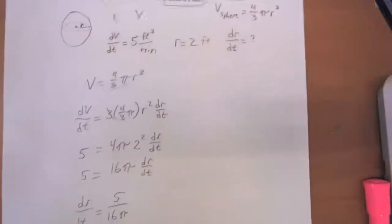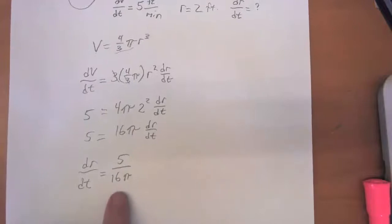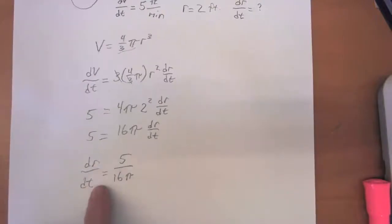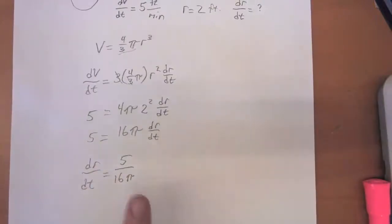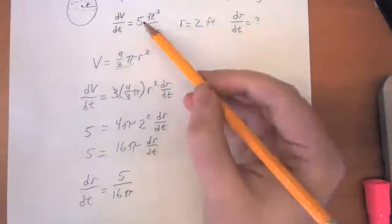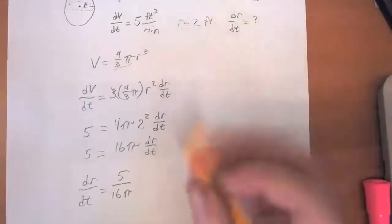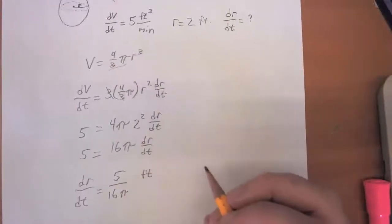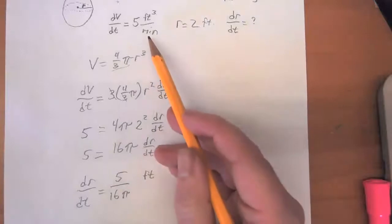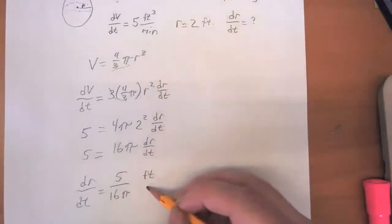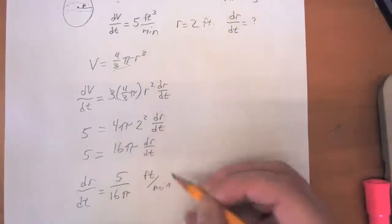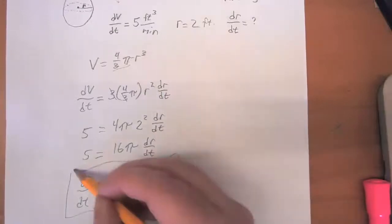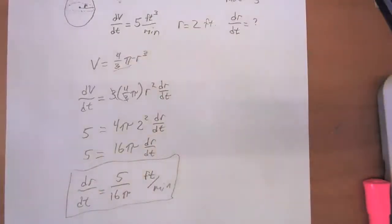And what's the units for this? We're talking about the change in radius with respect to time. So what do you think our units for this are going to be? Our volume is in terms of cubic feet, so the radius is going to be measured in feet. And the time that we're measuring this in is in minutes.